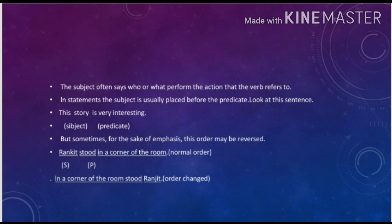But sometimes, for the sake of emphasis, this order may be reversed. The second sentence says, Ranjit stood in the corner of the room. This is normal order, where Ranjit is the subject and stood in the corner of the room is the predicate.